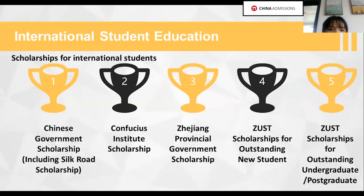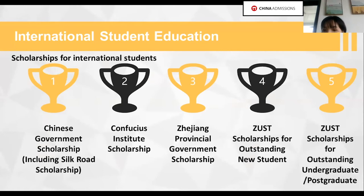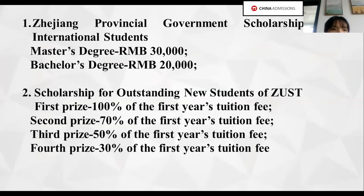Here are the scholarships we offer to international students: the Chinese Government Scholarship, the Confucius Institute Scholarship, and the Zhejiang Provincial Government Scholarship. The Provincial Government Scholarship is a one-time award of 30,000 RMB for master degree programs and 20,000 RMB for bachelor degree programs. We also have four levels of scholarships for outstanding new students of ZUST.